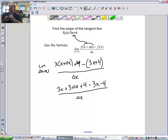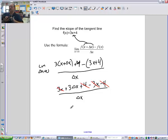Which you hopefully may have noticed is that this 3x and that 3x neutralize each other, as do this 4 and that 4. So we're just left with 3 delta x divided by delta x. Cancel those out, and so I'm left with 3. So the slope of the tangent line to 3x plus 4 is 3. If I had just asked you what the slope of 3x plus 4 is, what would you have said? Yeah, you would have said 3.